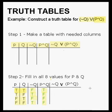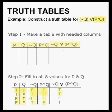Now all we have to do is combine the last two columns with OR. Remember that OR is true if either part is true. For this final column we are only looking at the two columns that precede it. When we have false OR true we get true. When we have true OR false we get true. When we have false OR false we get false — that is the only false value. In the very last row we have true OR false which is also true. So our final column gives us true, true, false, true.